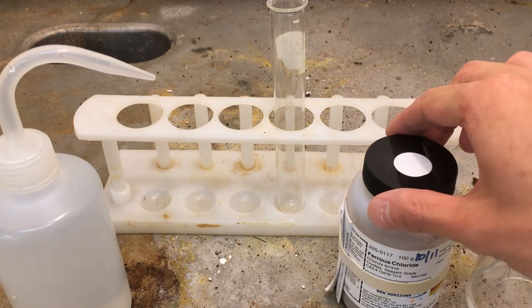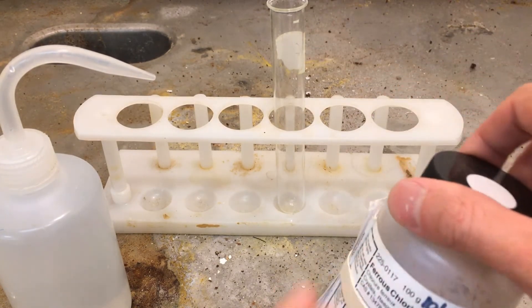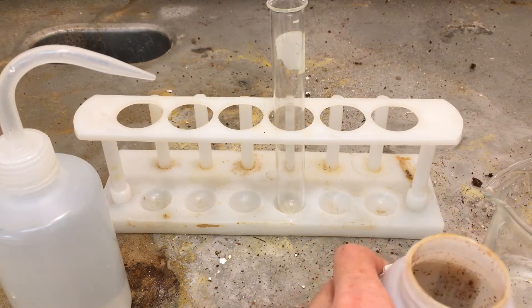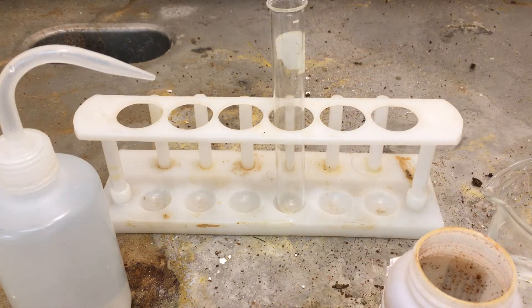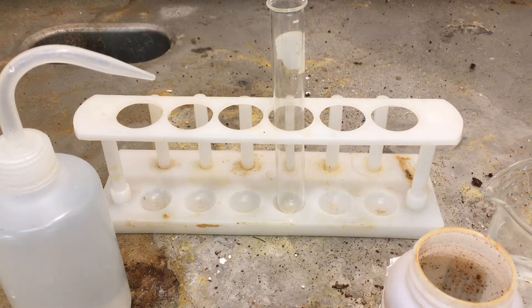We're going to start with this as a solid, dissolve it in a little bit of water, and then slowly add hydrogen peroxide. This is an oxidizing agent that will oxidize the iron from the plus 2 form to the plus 3 form.